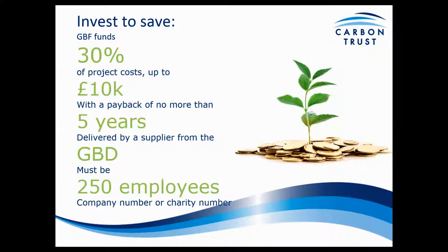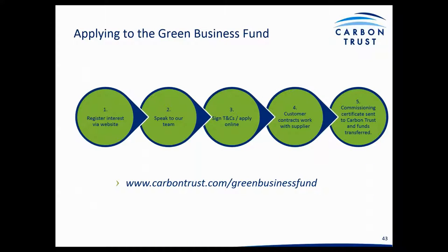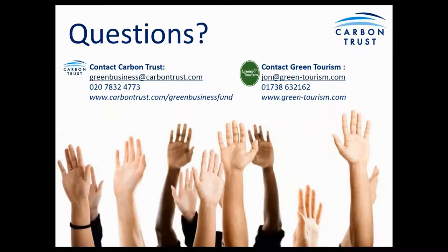A quick summary: up to 30% of project costs, payback of five years, must use a green business directory supplier, and fewer than 250 employees. All the information you need is on our website. You can register your interest there and one of our team will call you to chat through your circumstances. You fill in a few forms, contract the supplier delivering the work, provide evidence of what you've done, and we transfer the funds to you — quite quick, straightforward and easy.